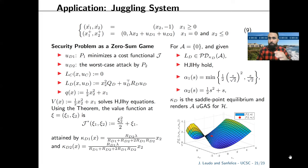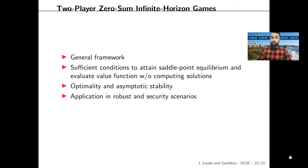The min-max behavior in the cost is depicted in the picture, where we vary the feedback law along the saddle point equilibrium to display the saddle point behavior. In conclusion, we presented a general framework for hybrid games with a result yielding saddle point equilibrium, a result connecting optimality and asymptotic stability with application to security scenarios, and an application to robust scenarios available in the paper. Thank you for your attention.